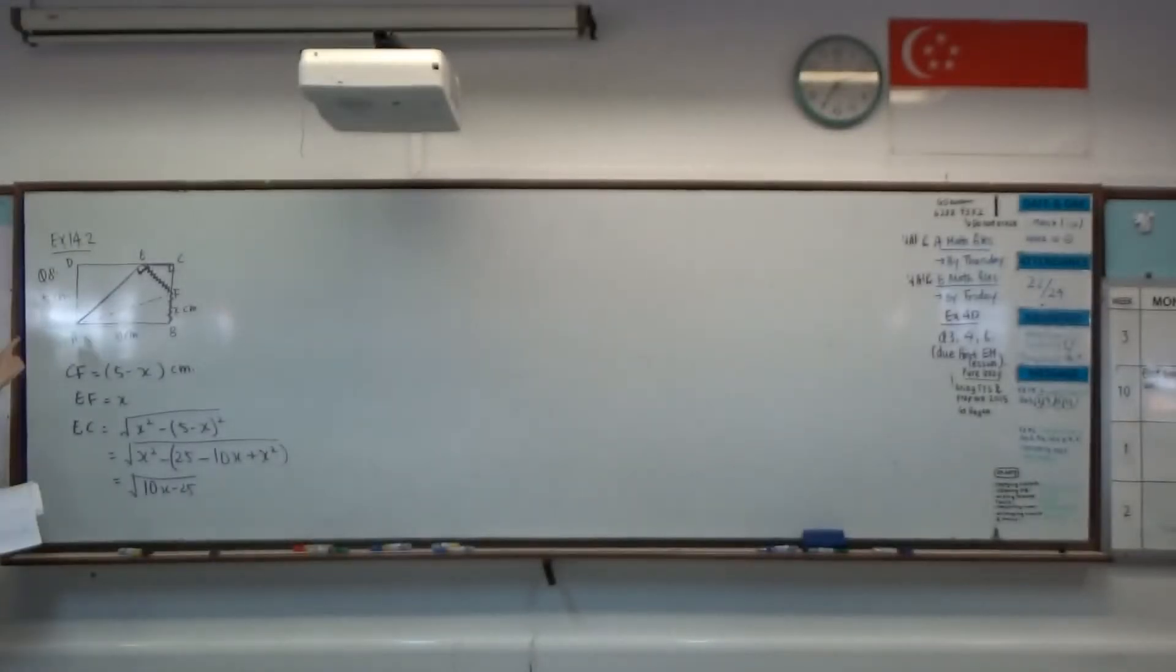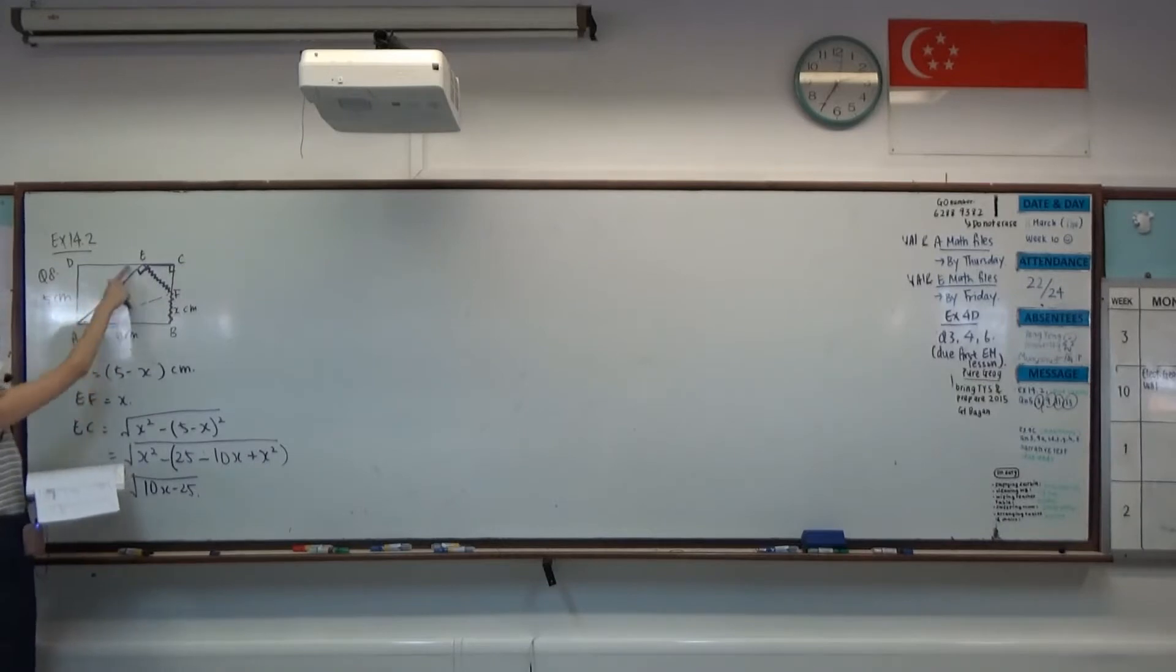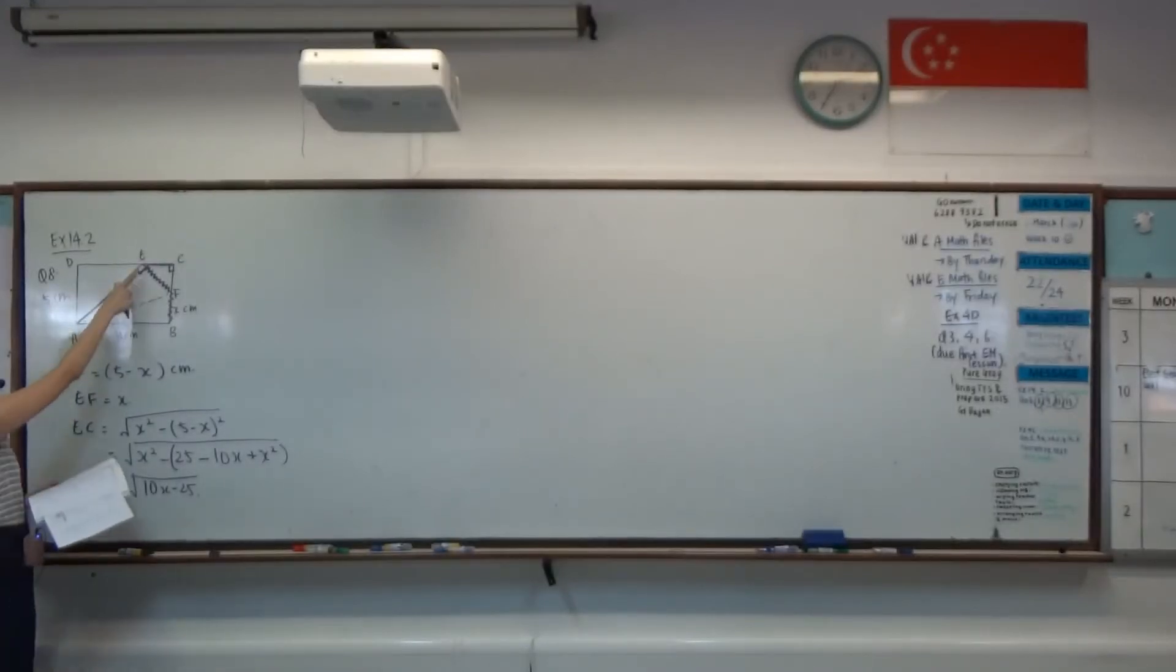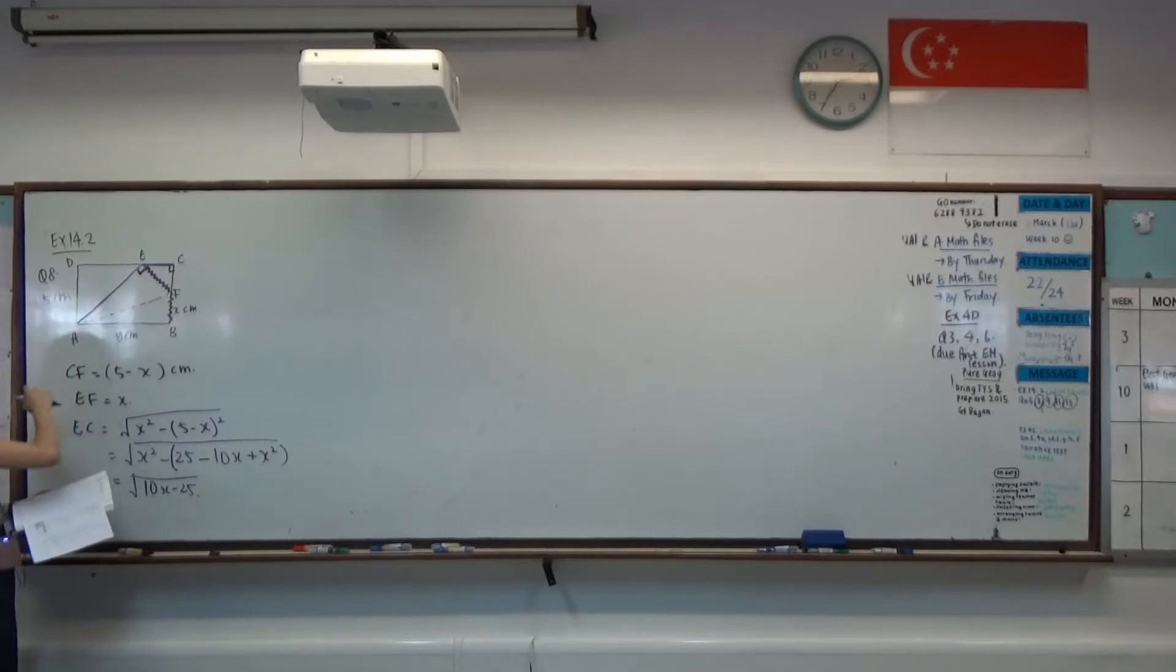The next one that we got to find is the expression for AE. Since I know the length of EF already, which is X, I need to at least be able to figure out the length of AF, so that I could use a similar method, Pythagoras theorem, to figure out the length of AE. So to see the length of AF, AF also belongs to a right-angle triangle, this side here. So we see that we need to convert our Y in terms of X.